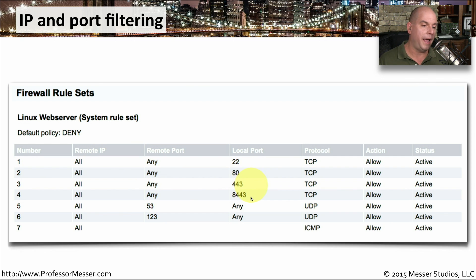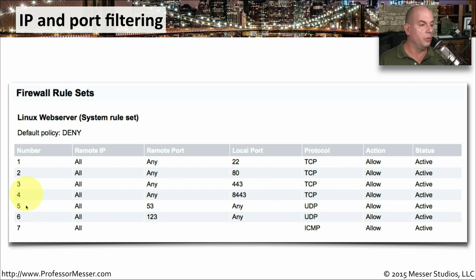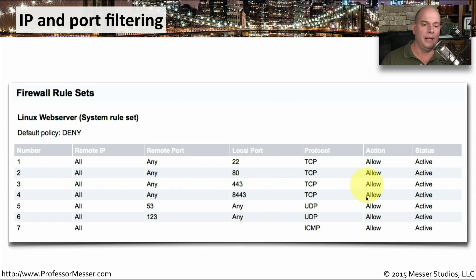Rule four is for port 8443. For this particular server, web management is provided in encrypted form on this port, so there's an allow rule so that the administrator can connect to the device over that port number in the browser and access the administration capabilities of that web server. Rule five is port 53 — if anyone is coming from port 53 over UDP to any local port, it's allowed, which enables DNS services to the server.